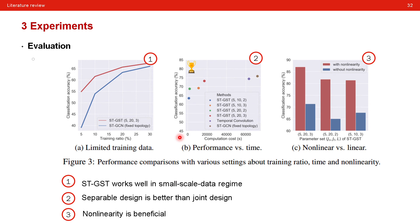They present three major findings. First, the proposed model works well in small-scale data regimes because it does not require much training data compared to deep learning methods. Second, the separable design is better than the joint design, indicating that simpler is better — we do not need to construct complex graph structures with tricky interactions, as simple graph structure often performs better. Third, linearity is beneficial. These are the main findings of this paper.